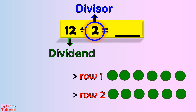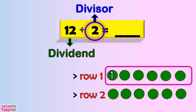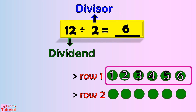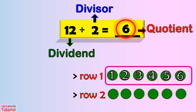Let's go ahead and count how many objects are there in each group. One, two, three, four, five, six. There are six objects in one group. So, twelve divided by two equals six. The answer is called the quotient. That tells you how many columns are there in one row.